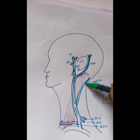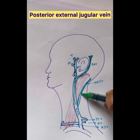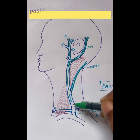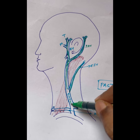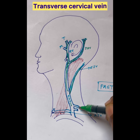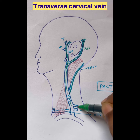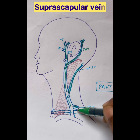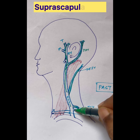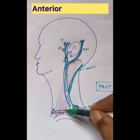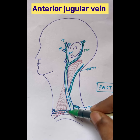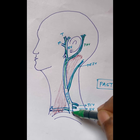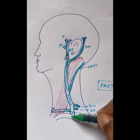The first tributary is the posterior external jugular vein, then the transverse cervical vein, suprascapular vein, and anterior jugular vein.